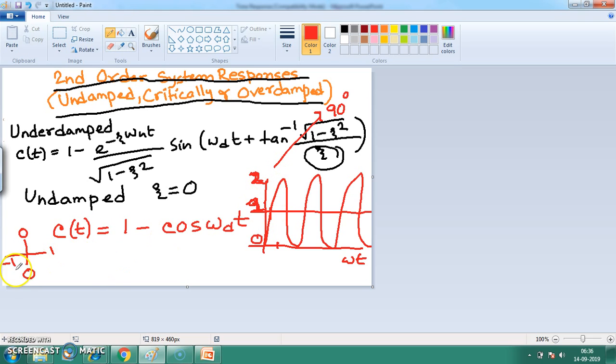Next, at value of omega d t equal to pi, the value of cos omega d t is equal to minus 1. That means c(t) equals plus 2.